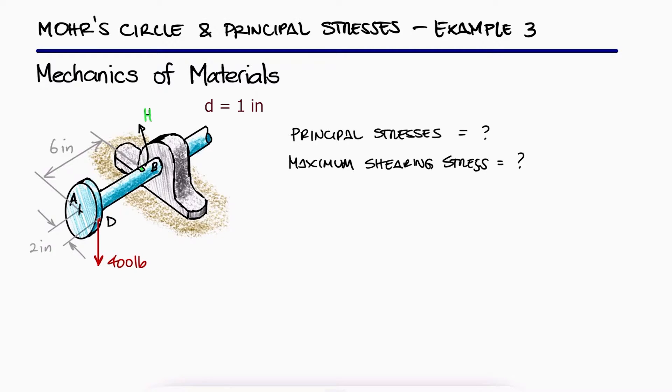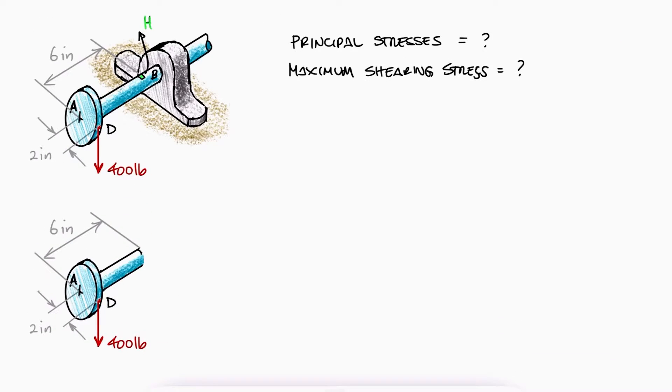This is the third example for the Mohr circle and principal stresses main video. The links to that main video and other examples are in the description below. By performing a cut at H, we see that at the cut,